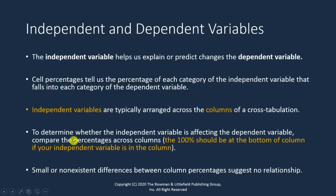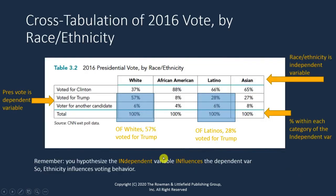This is important because we need to be able to identify which is our dependent and independent variable. Generally we arrange a cross-tab such that the independent variable is in the columns, and if so, the 100% should be at the bottom of the column. Here's this example broken down — instead of age categories, here we have ethnic groups and voting behavior. We hypothesize the independent variable is ethnicity, because we think that influences one's voting behavior, which is the dependent variable. We've arranged the independent variable in the column, dependent variable in the rows, and we see the percents are summing to 100 within the column.